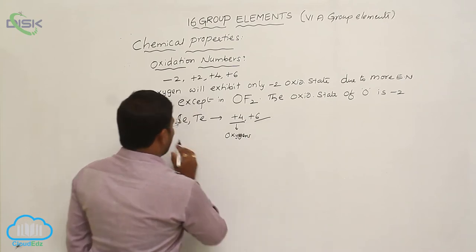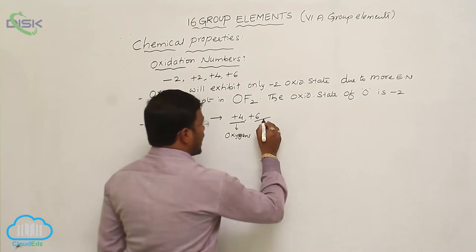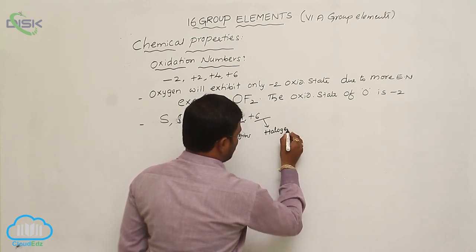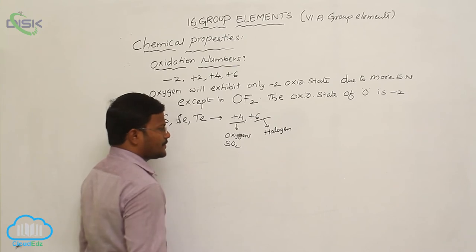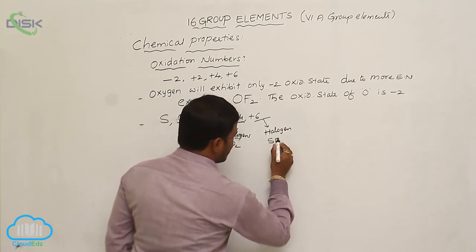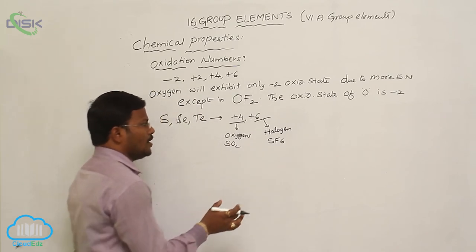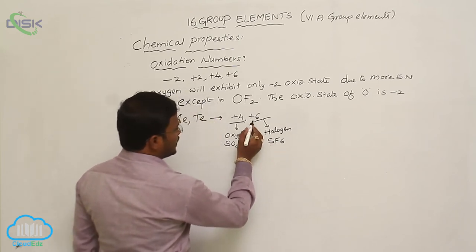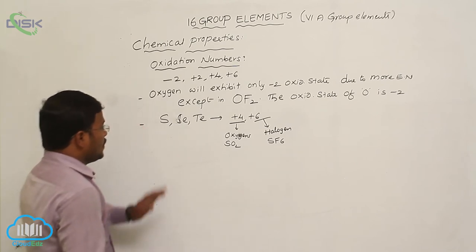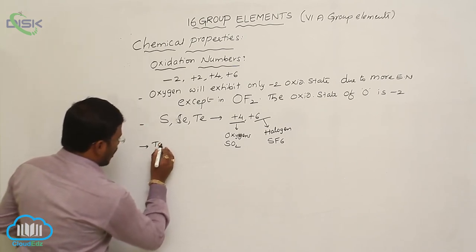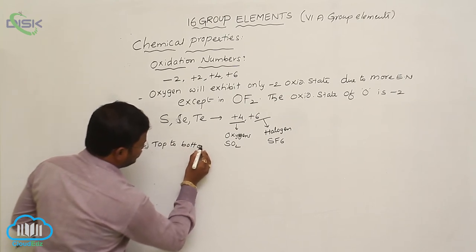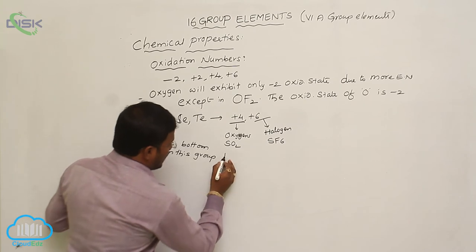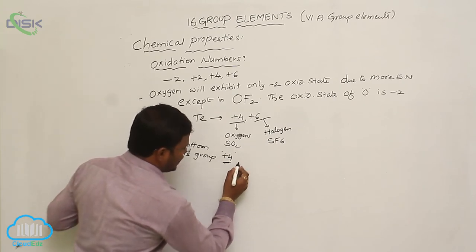The +6 oxidation state of sulfur, selenium, and tellurium is identified by reacting them with halogens. The most important and most stable halogen compound exhibited by sulfur is SF₆ (sulfur hexafluoride), where sulfur has an oxidation state of +6.